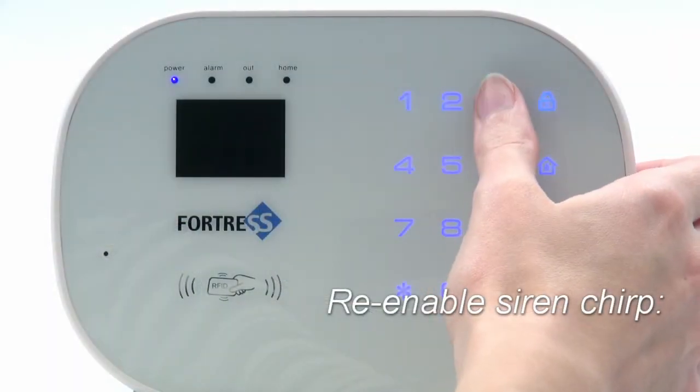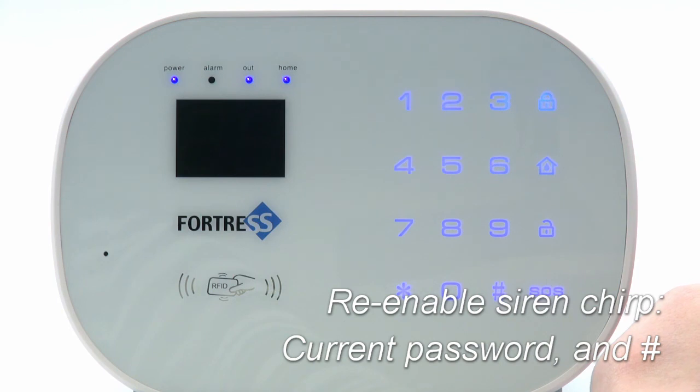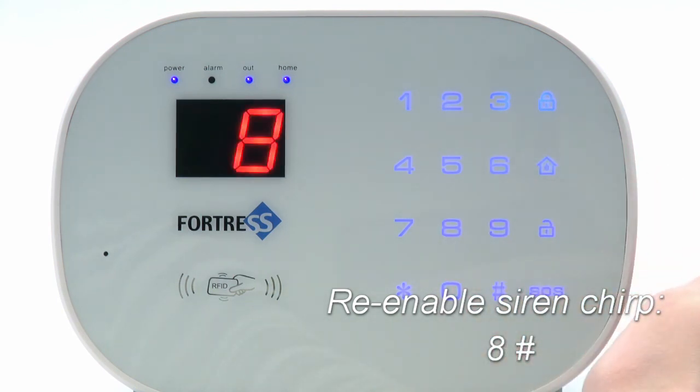To turn the chirp back on, simply go back into programming mode, then enter 8 pound.